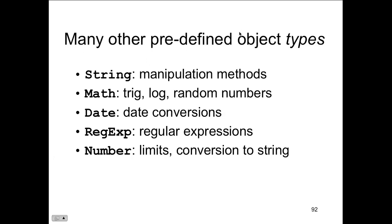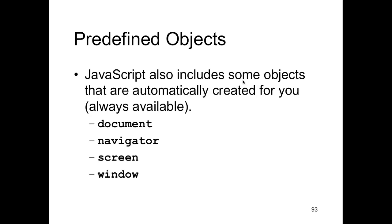There are many other predefined object types: String, Math, Date, regular expression, Number. Numbers have limits, there are conversions to string. Regular expressions are like in Linux and Unix environments. Date conversions, Math — it comes in handy for different calculations. We also have predefined objects: Document, Navigator, Screen, and Window.